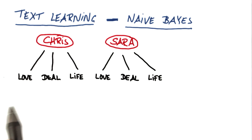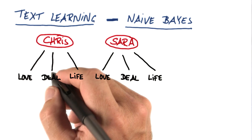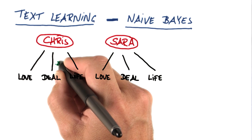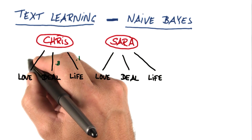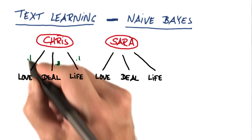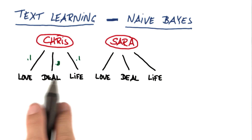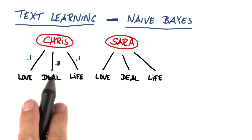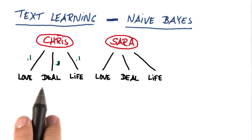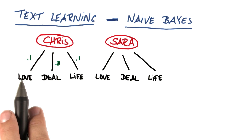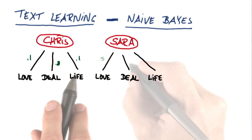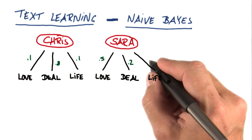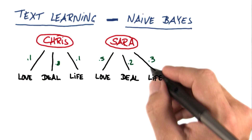For simplicity, let's say Chris loves talking about deals. So 80% of his words, or 0.8, are 'deal'. He talks about life and love quite a bit with 0.1 probability. So if Chris adds a word in an email, he's going to 80% of the time use the word 'deal' and 10% of the time 'love' or 'life'.